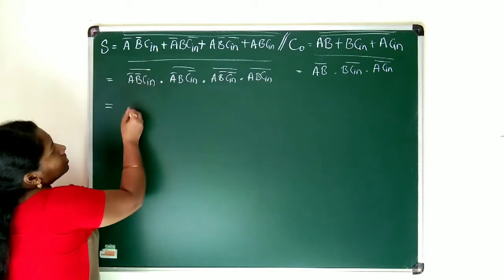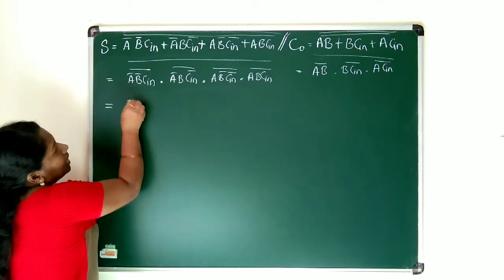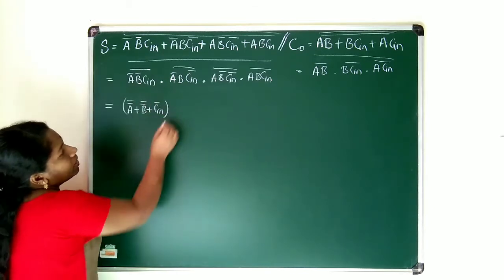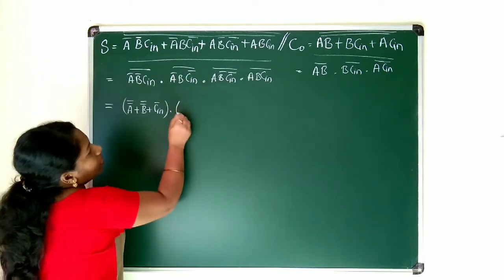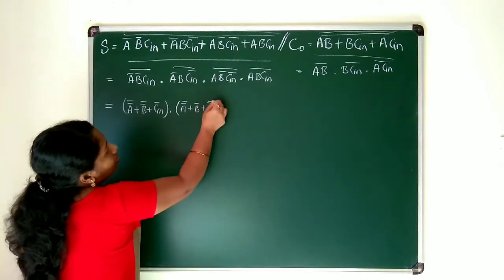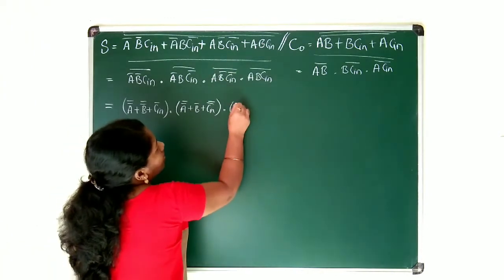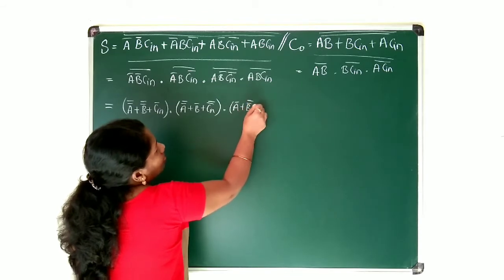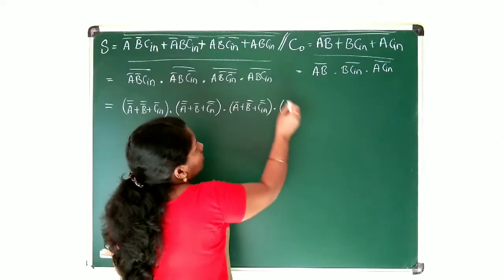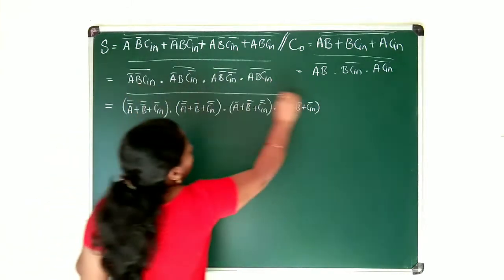So, here when I apply this, what you will be getting? This term's whole complement I will be applying — you get A double bar plus B double bar plus C-in bar. That is the first term. The next term whole complement gives A double bar plus B bar plus C-in double bar. Next term gives A double bar plus B double bar plus C-in double bar. The last term gives A bar plus B bar plus C-in bar. The whole complement remains as it is.